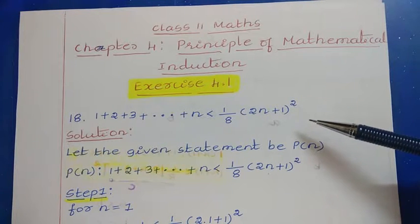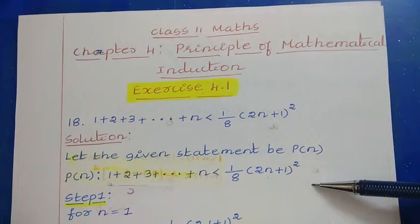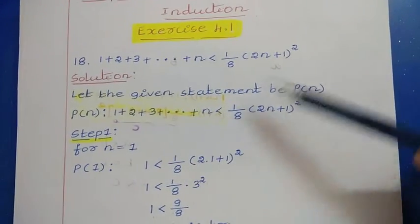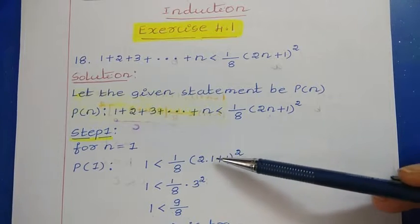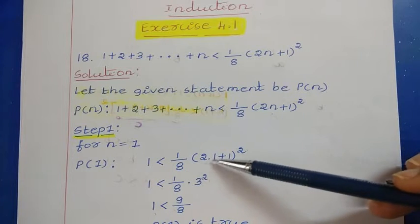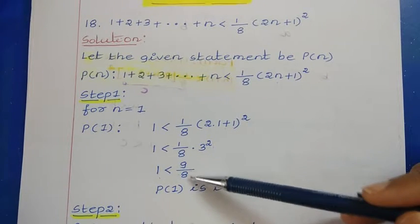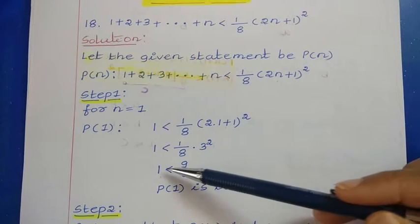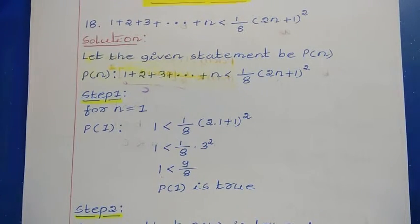First let us check the given statement for n equal to 1, that is P(1). From the left part I will consider the value 1, then less than from the right part: 1/8 into (2n+1) whole square. Replacing n with 1, we have 1/8 into (2×1+1) whole square, that is 1/8 into 3 squared, which gives 1 less than 9/8. Since 9/8 equals 1.1 something, 1 is less than 1.1 something. So the given statement is true for n equal to 1.